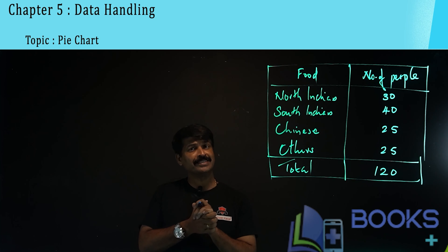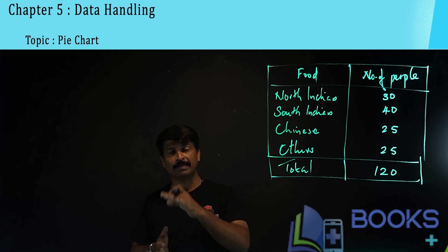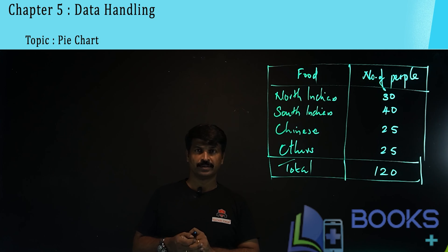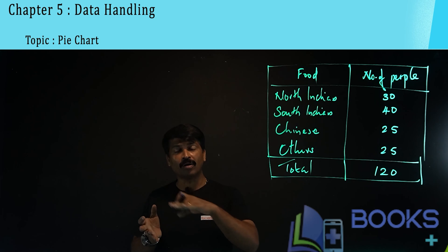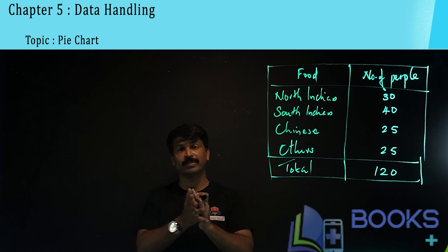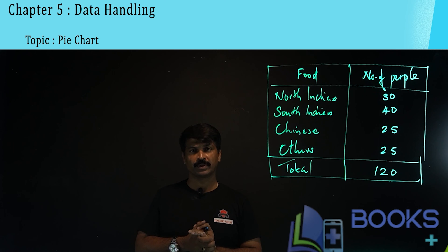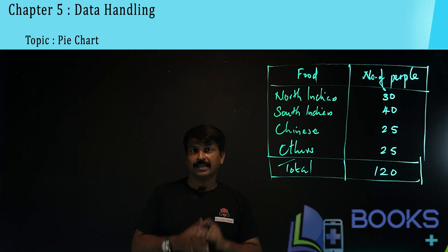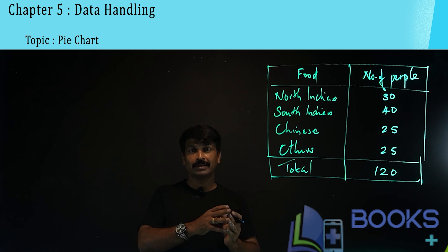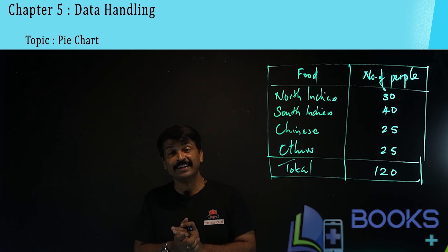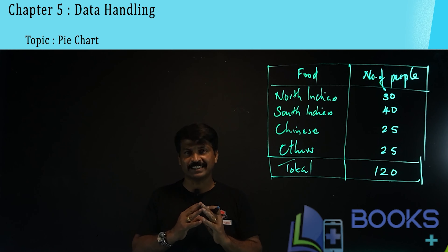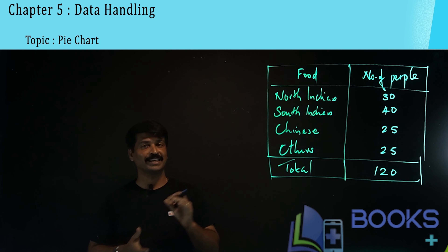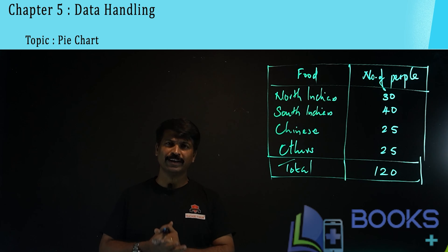What is the angle around a point? The angle around a point is 360 degrees. When you measure all the angles in a circle, you get 360 degrees. In a pie chart or circle graph, the information given is divided into small sectors so that each sector corresponds to the given information.